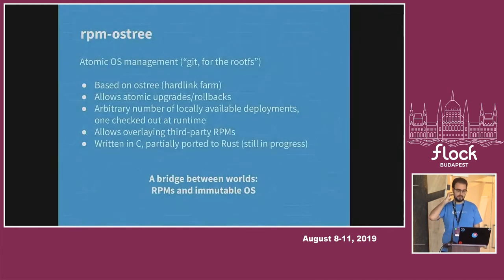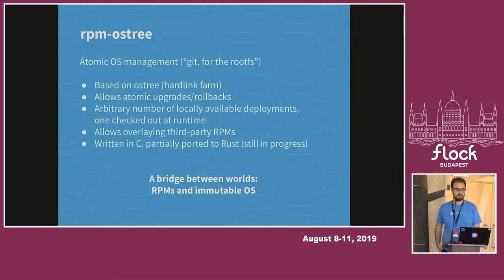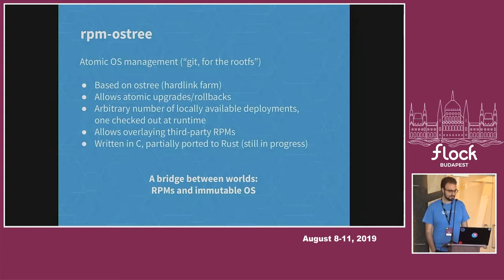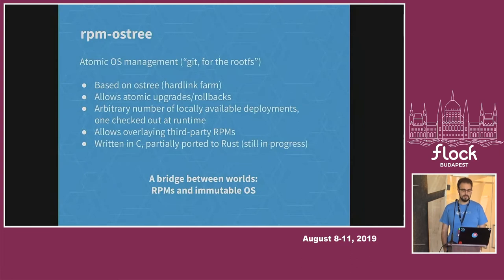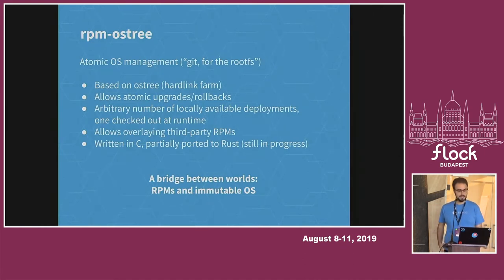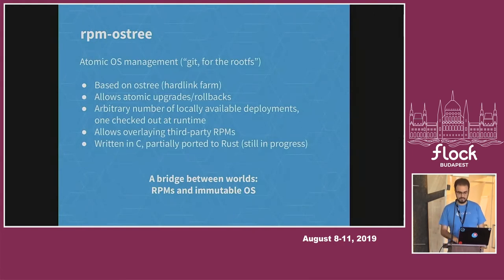The component on the node itself is rpm-ostree, which is also used by other Fedora flavors. It does atomic OS management — kind of like Git but for the root file system. It's based on OSTree, which means you get content deduplication by not having duplicate copies of the same binary content. It allows atomic updates and atomic rollbacks, an arbitrary number of deployments, and you can also install RPMs. It's written in C with parts being ported to Rust, still in progress, and it bridges between the traditional RPM world and the immutable OS world.